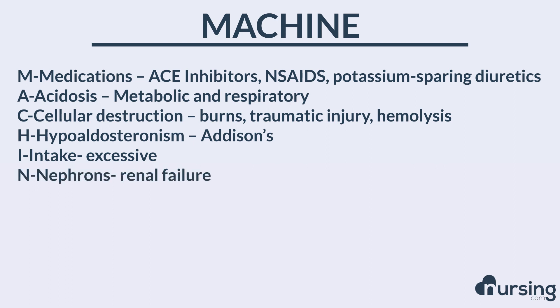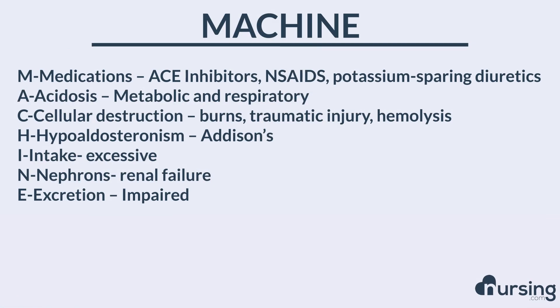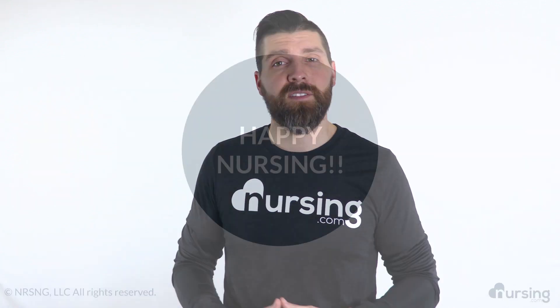N stands for nephrons or renal failure. If the nephrons in the kidneys aren't working, this will cause an increase in potassium. E stands for excretion — if there's an impaired ability for the body to excrete or get rid of potassium, the potassium is going to be increased in the blood and can cause heart or skeletal muscle impulses to misfire, and you could have a patient with some serious problems.